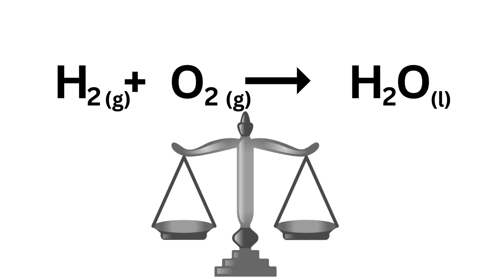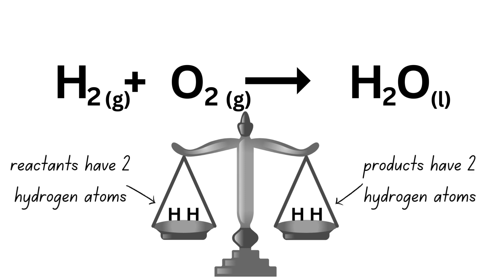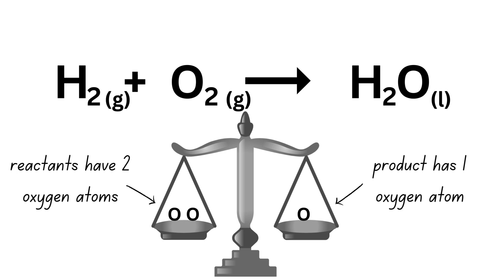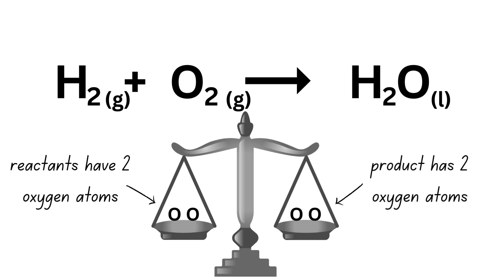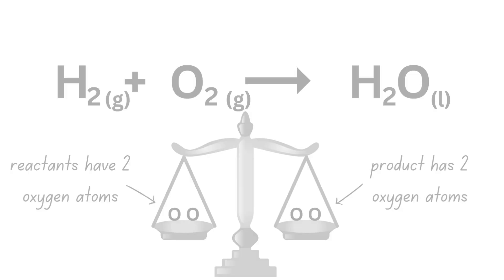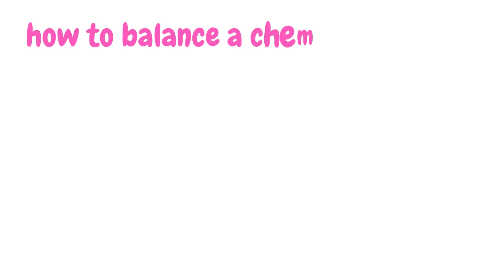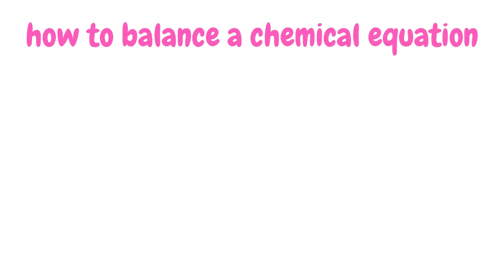We balance chemical equations to ensure that there are the same number of atoms of each element present in the products as there were in the reactants. In other words, if the number of atoms of each element is not the same on both sides of the arrow, then we need to balance the reaction to make it so. Let's go through the steps to balance a chemical equation.